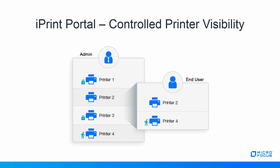A key aspect of iPrint Portal is controlled printer visibility. One being access-control printer lists, where a user needs to log into the portal to view only the printers to which they have access. The second is public visibility, where an administrator can create visibility for printers which is open for guests.